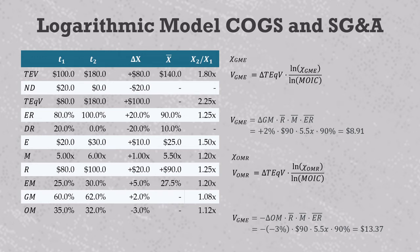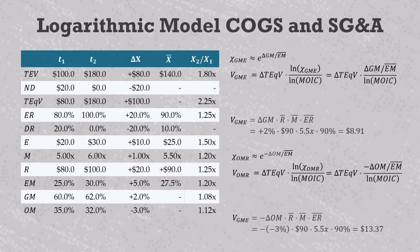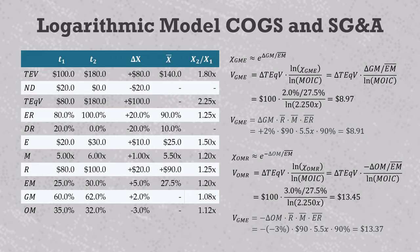It turns out there's another way to do this. It won't give you an exact answer, but it will be quite close and is often more convenient when measuring value creation in dollars. I show in the book that these equity return multipliers are approximately equal to e raised to the power of either delta GM or minus delta OM divided by the average holding period EBITDA margin. This is convenient because the natural log of e to the x is simply x, so our value creation formulas become the following. When we plug in the numbers, we get gross margin expansion of 8.91 million and operating margin reduction of 13.37 million — both within 1% of the derivative model.